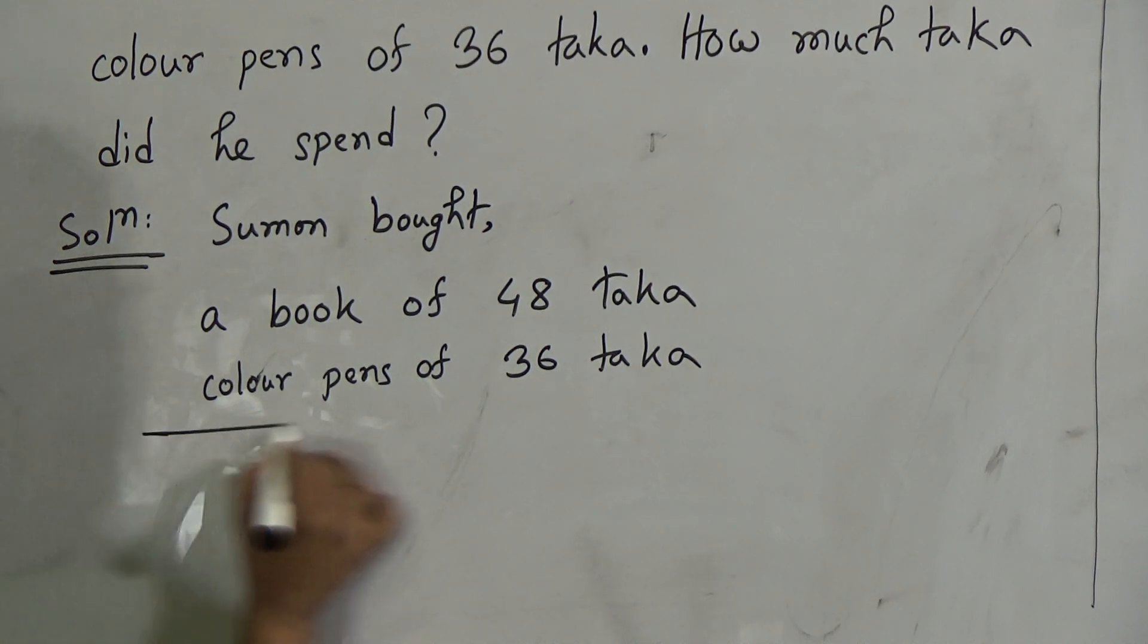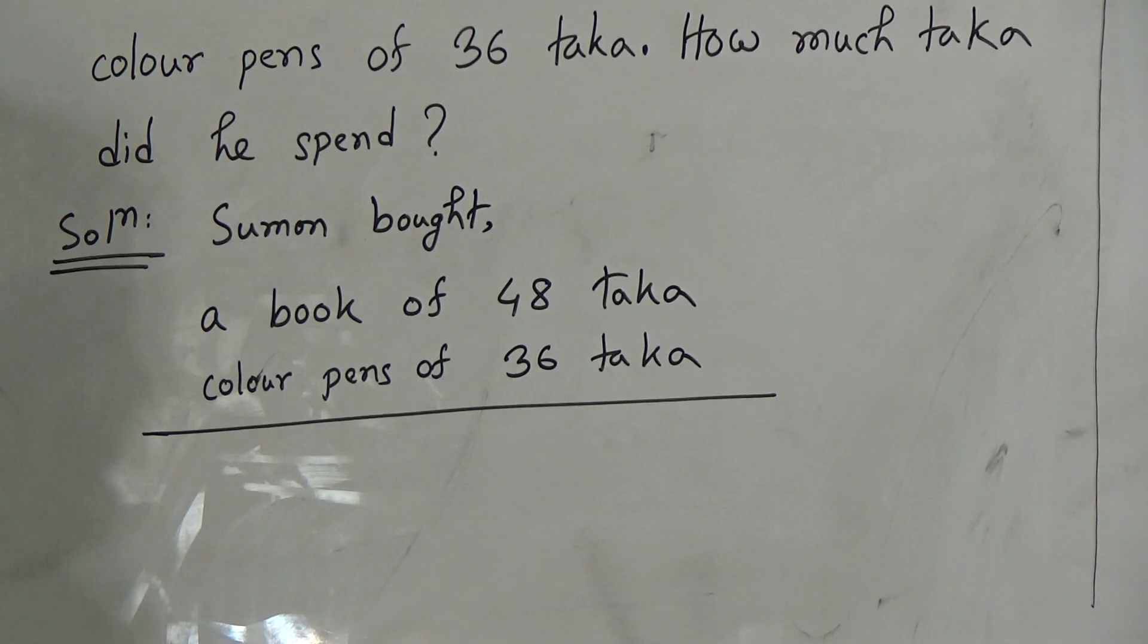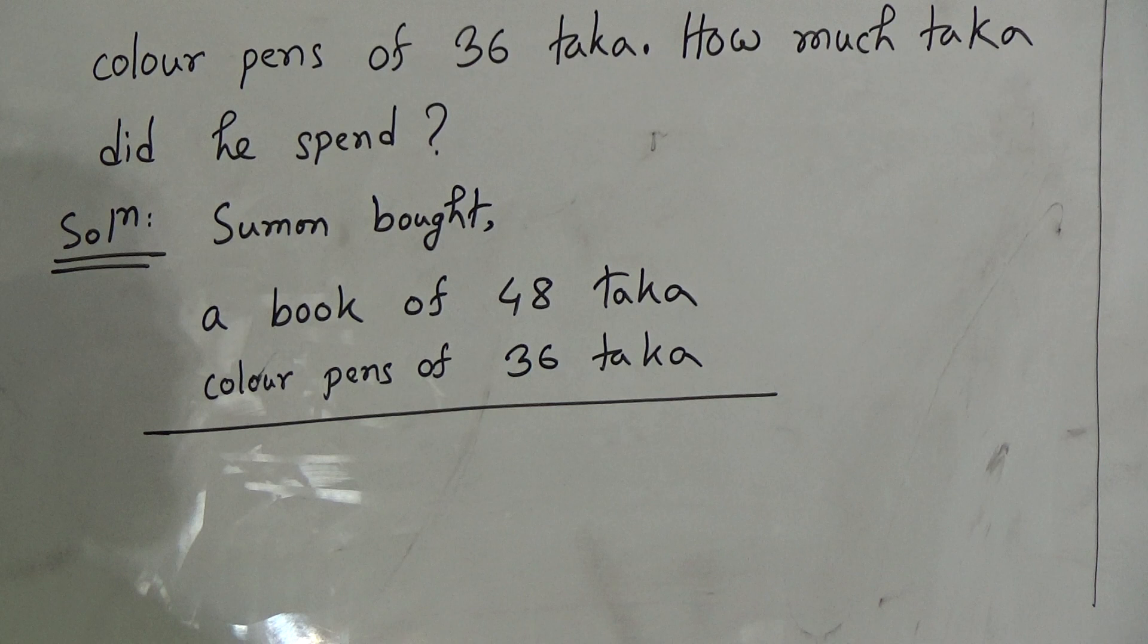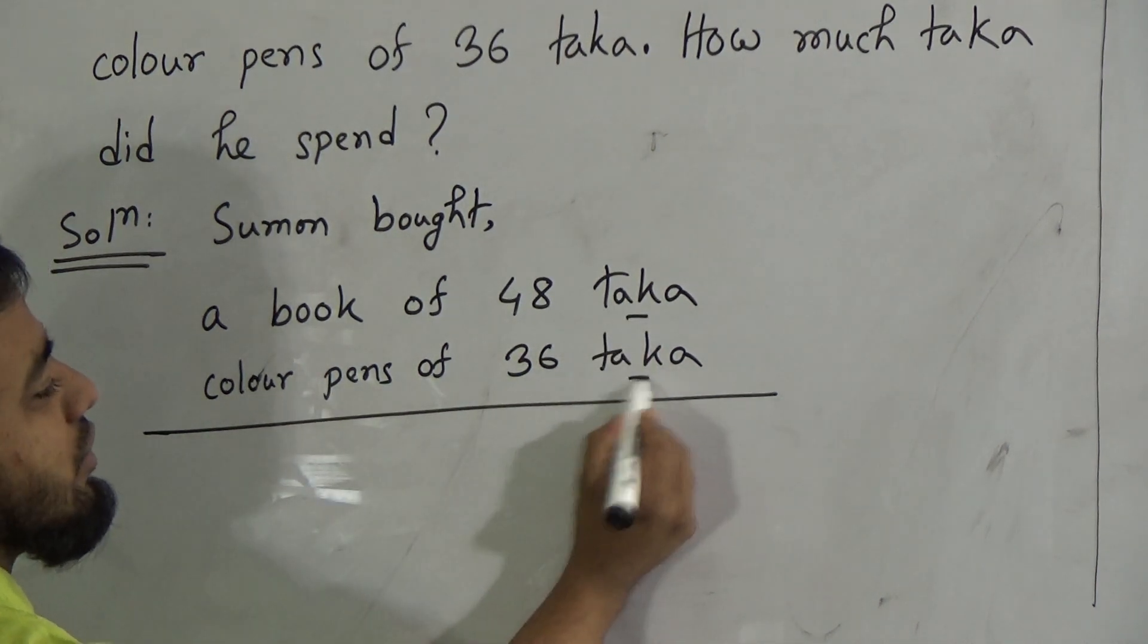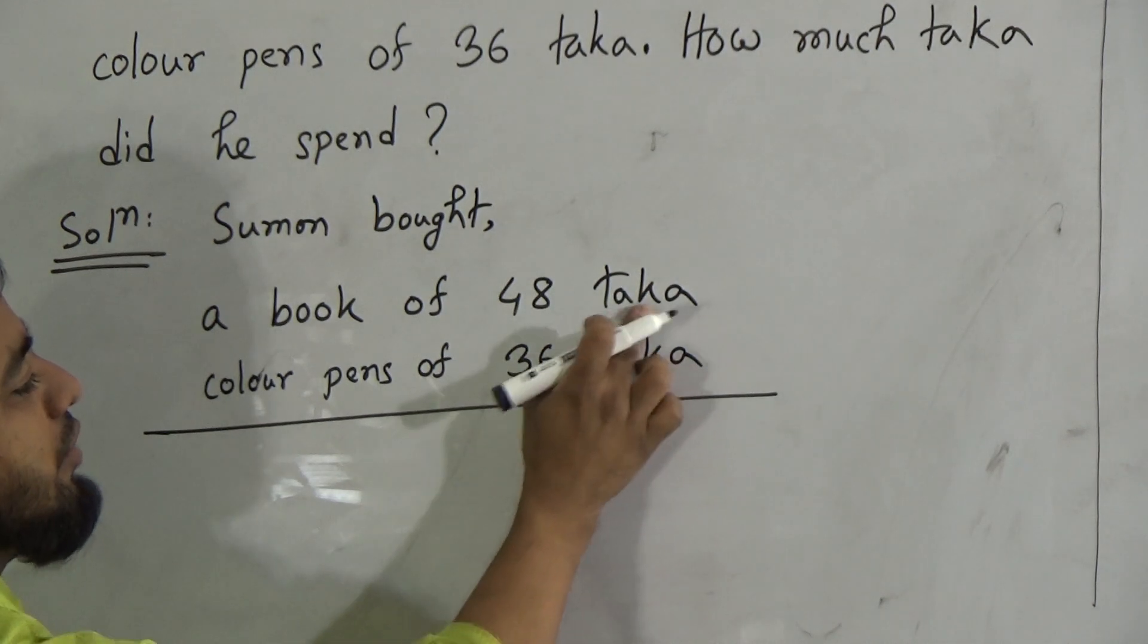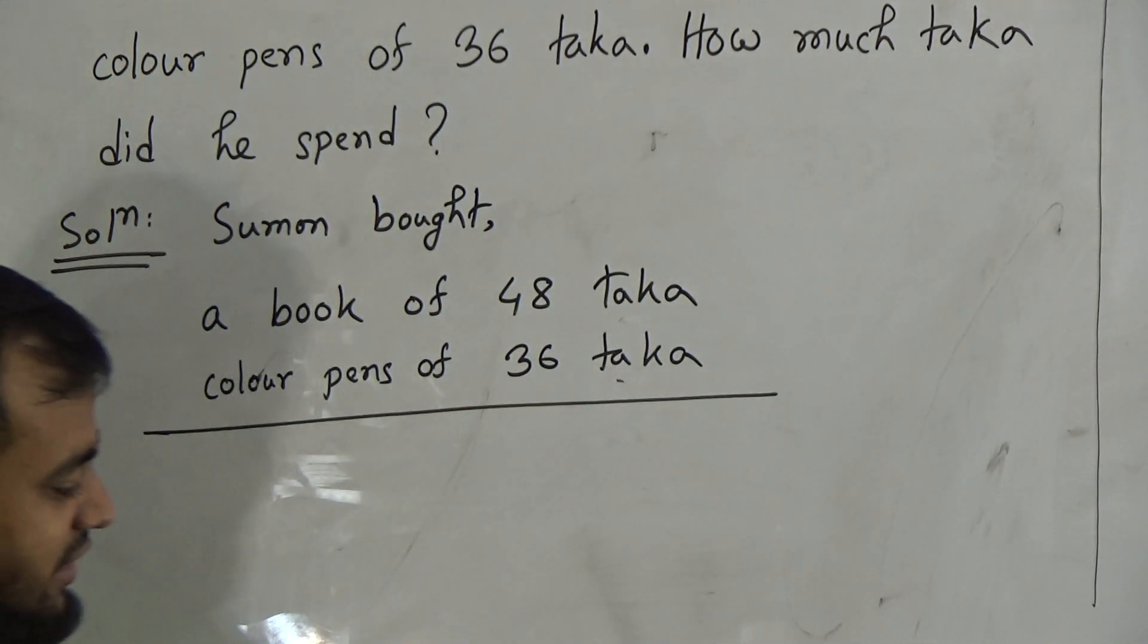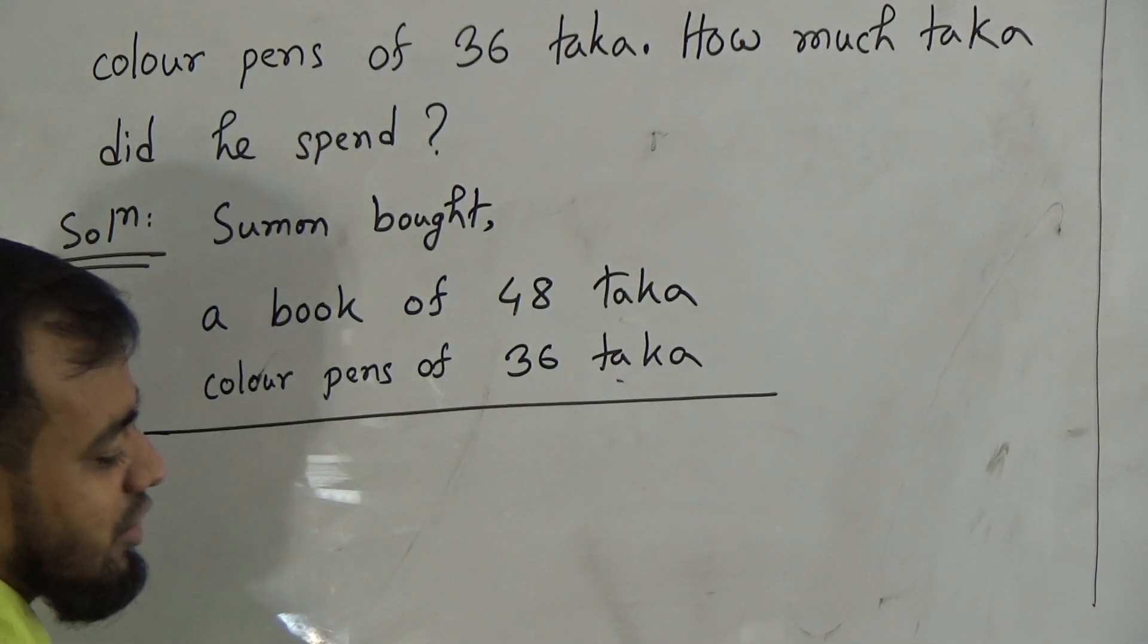We should write down all the numbers in the same column to add or subtract, my dear students. Now look, there is only one unit in a single line, taka. And here is also taka. That means the units are same. When the units are same, we will do add or subtract.